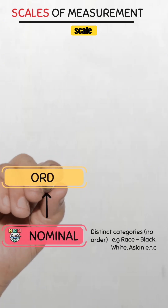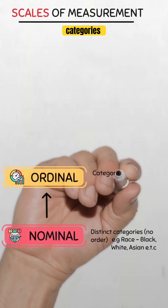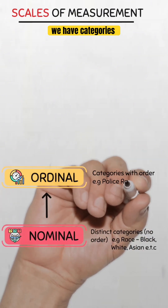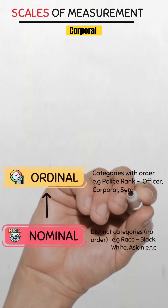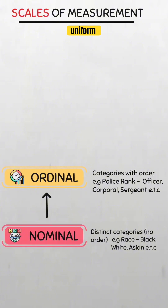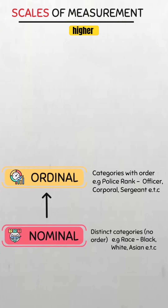Next is the ordinal scale. This scale organizes data into ordered categories, but the intervals between them are not necessarily equal. For example, police ranks — we have categories like officer, corporal, sergeant, etc. Here the order matters, but the gap between the ranks isn't uniform. We can't say the gap between an officer and a corporal is the same as that between a corporal and a sergeant. We just know that one is ranked higher than the other.